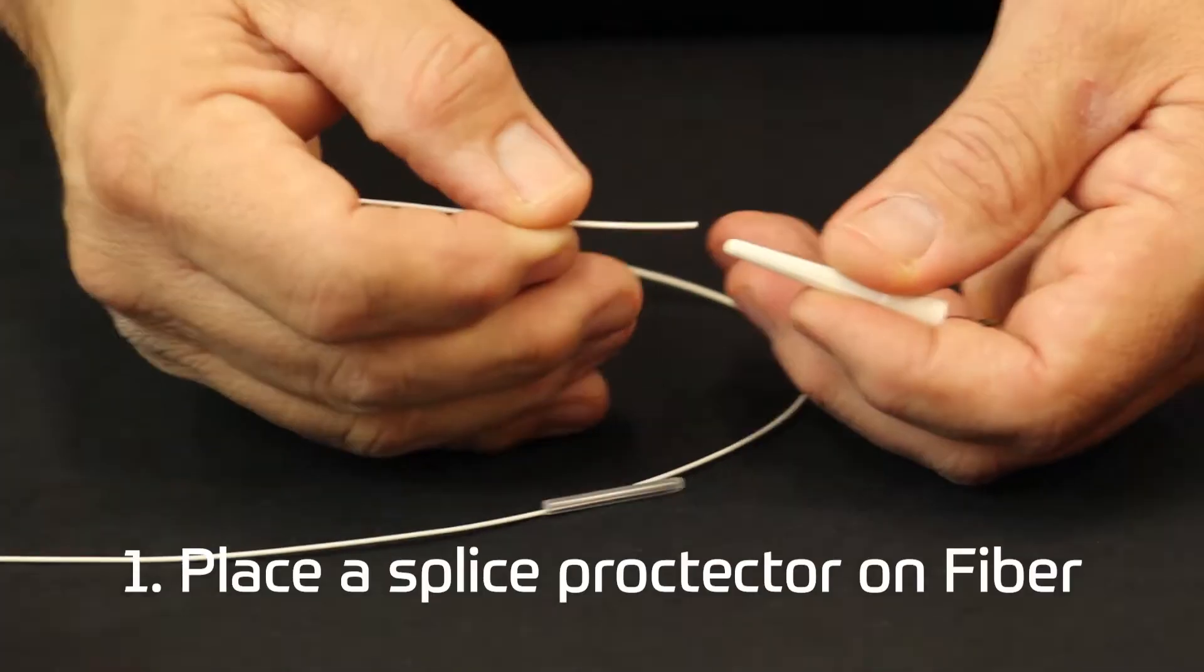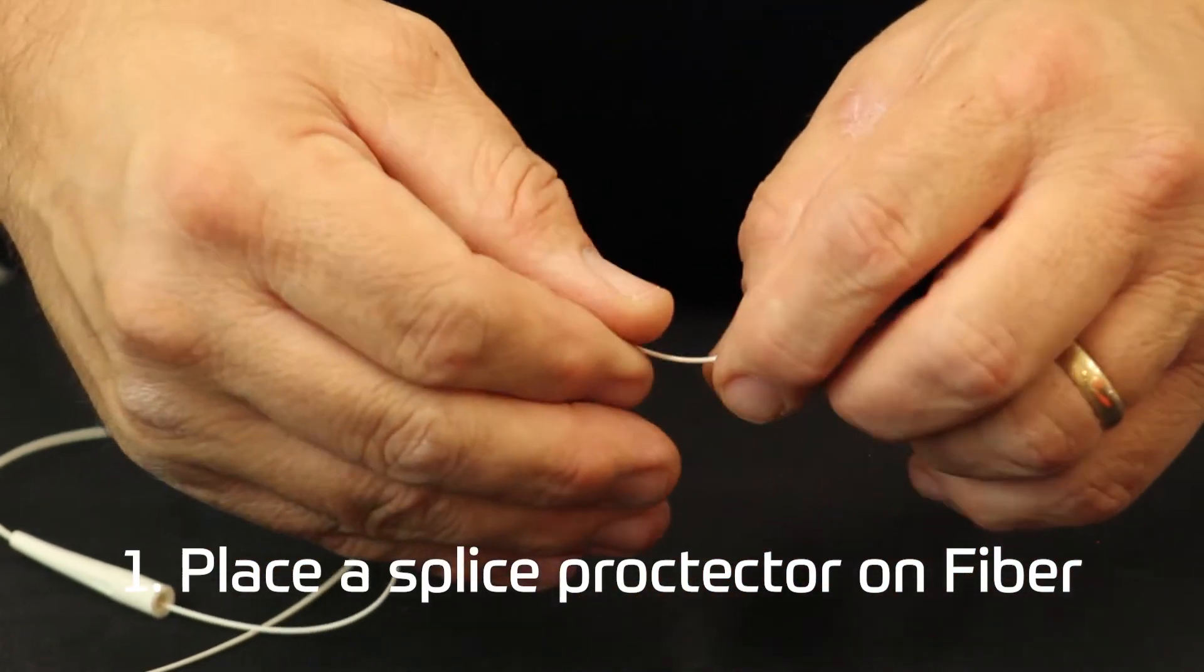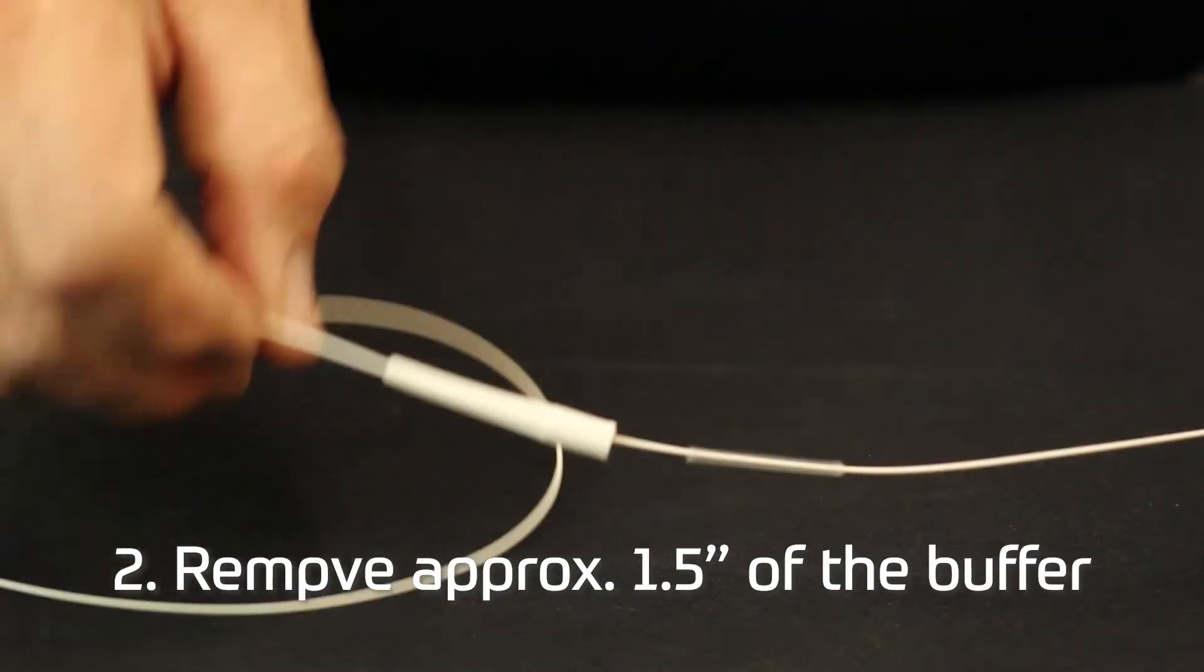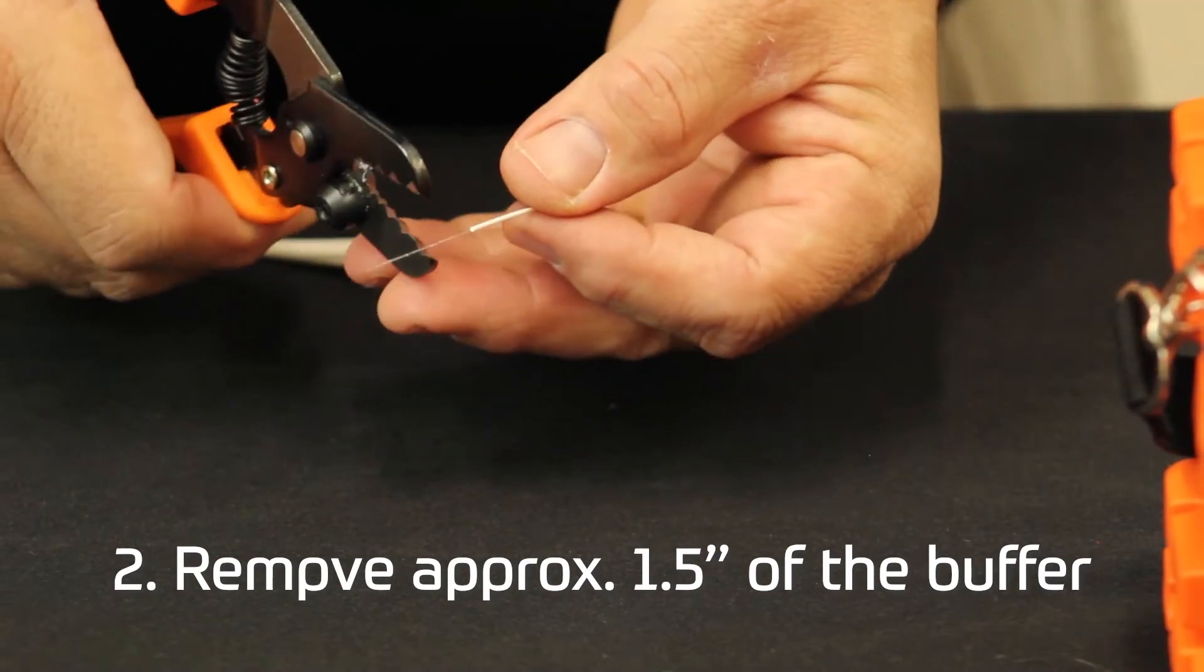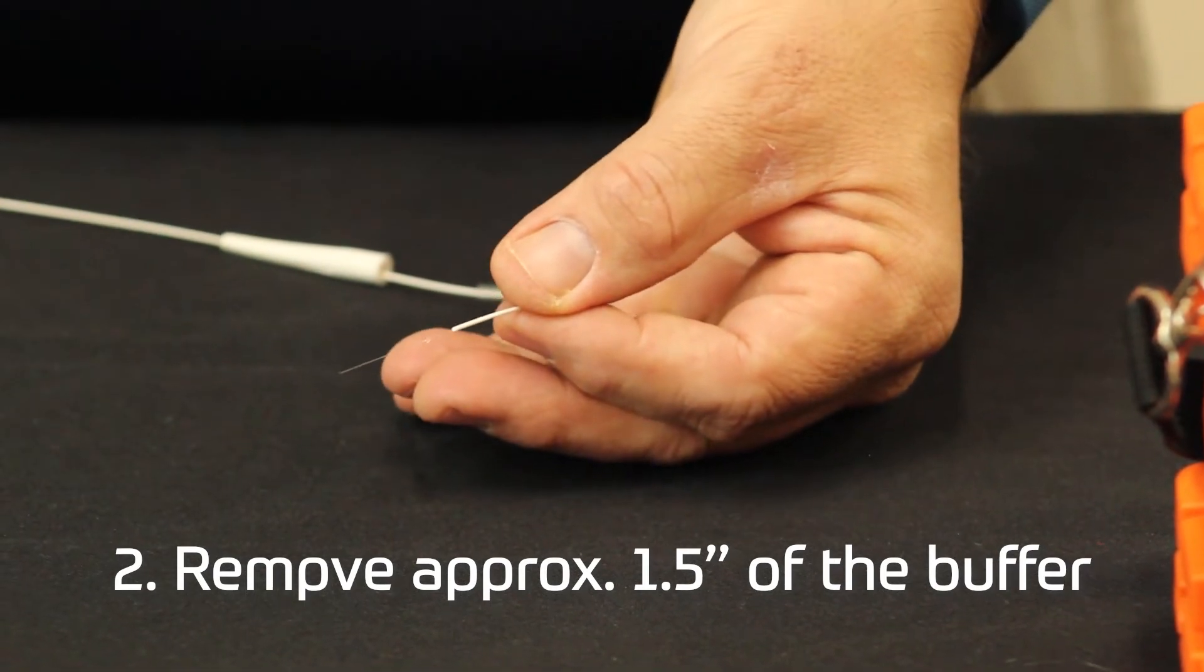Place a splice protector for the splice-on connector on the fiber. Remove approximately 1.5 inches or 38 millimeters of the buffer and acrylic coating from the fiber.